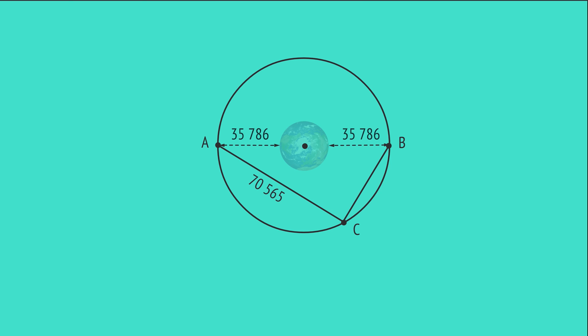First we draw a diagram with the required information, and calculate the length of AB by adding these values. Now, the triangle ABC is right-angled because the angle in a semicircle is always 90 degrees.